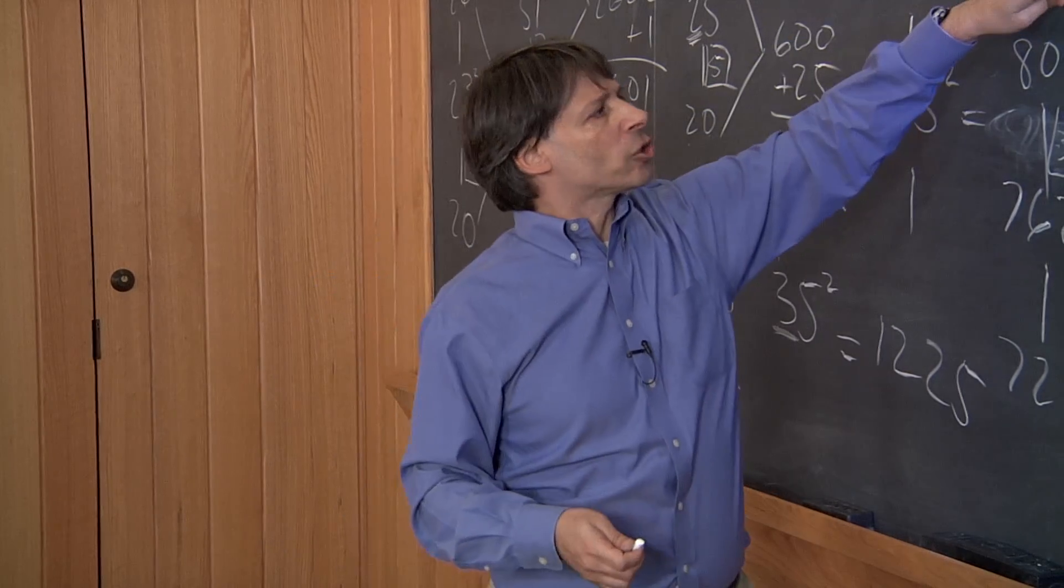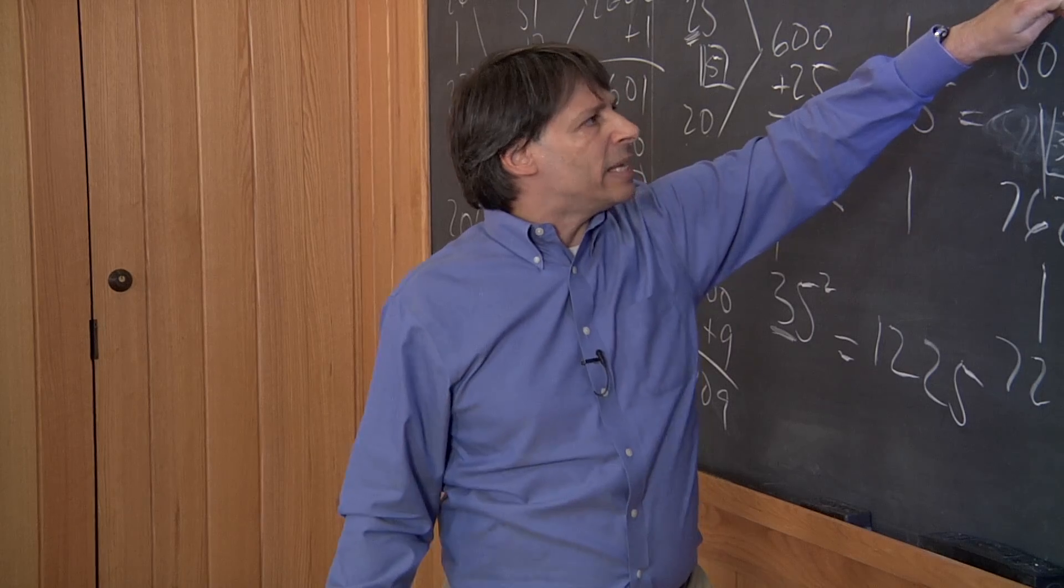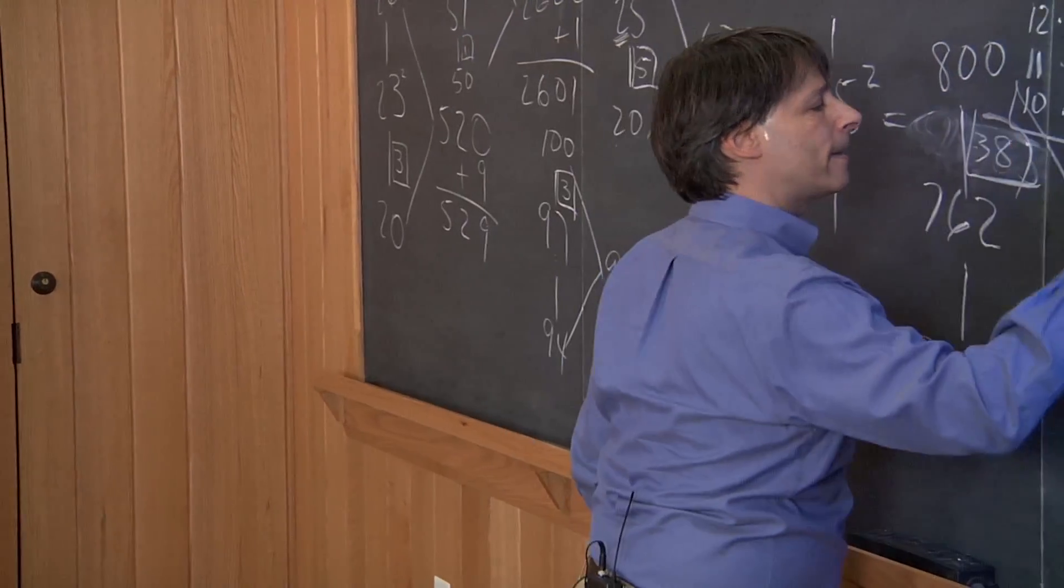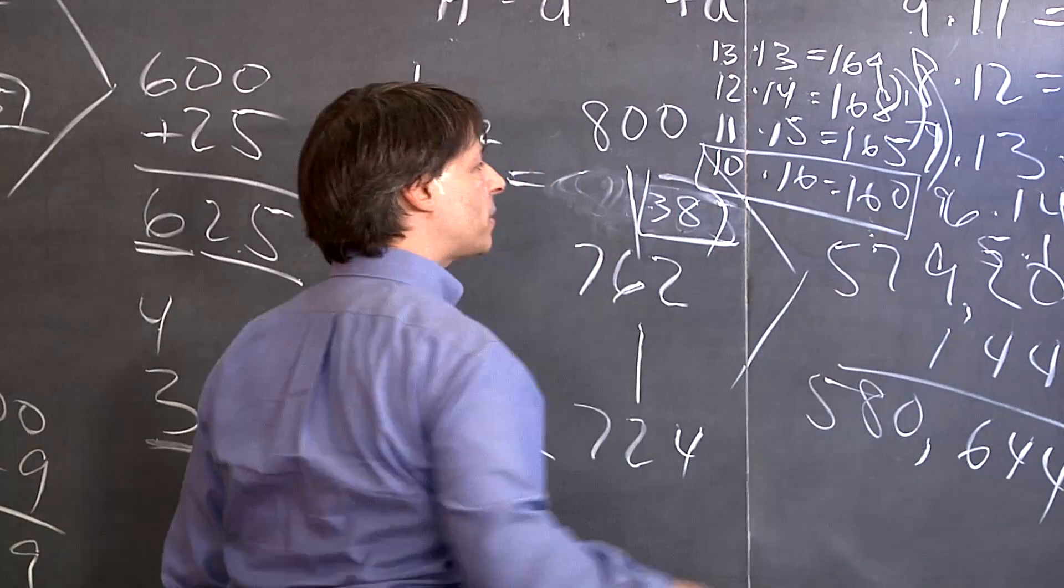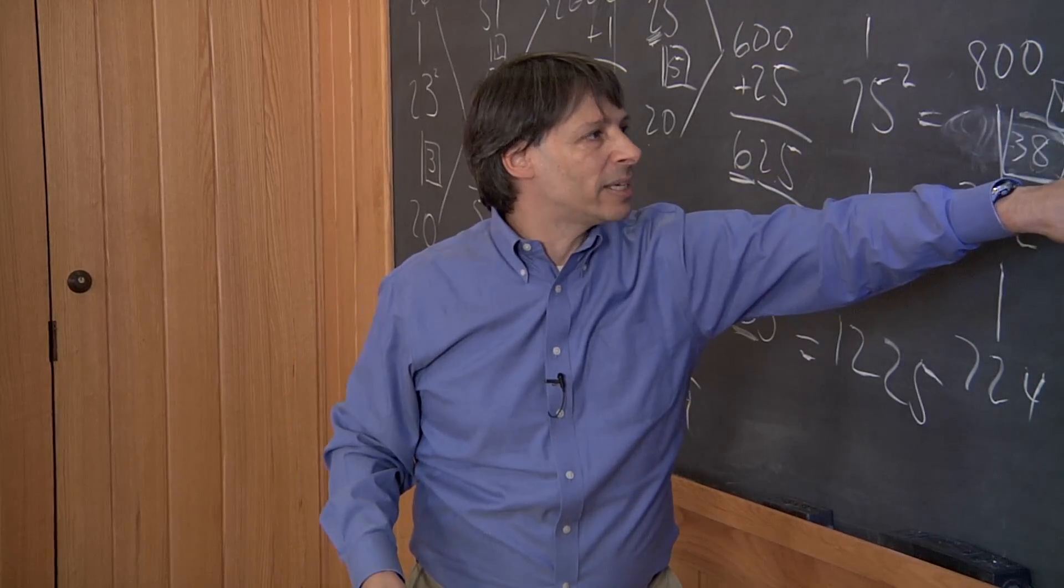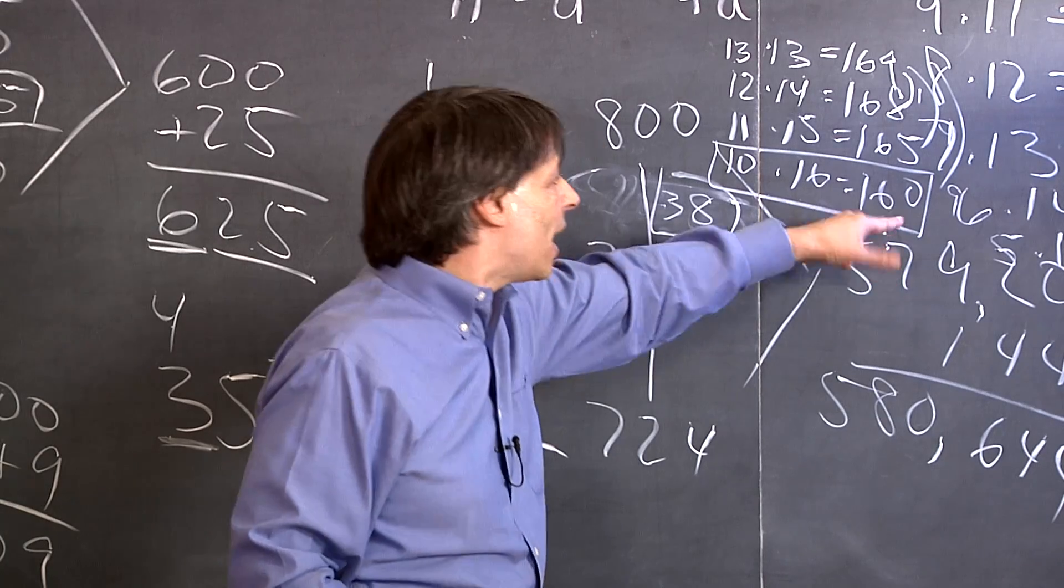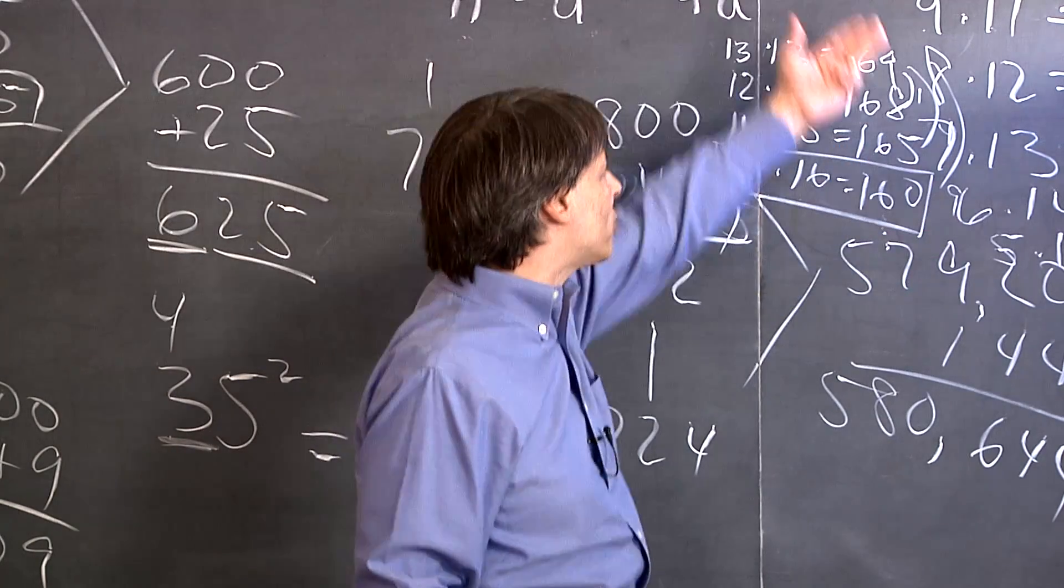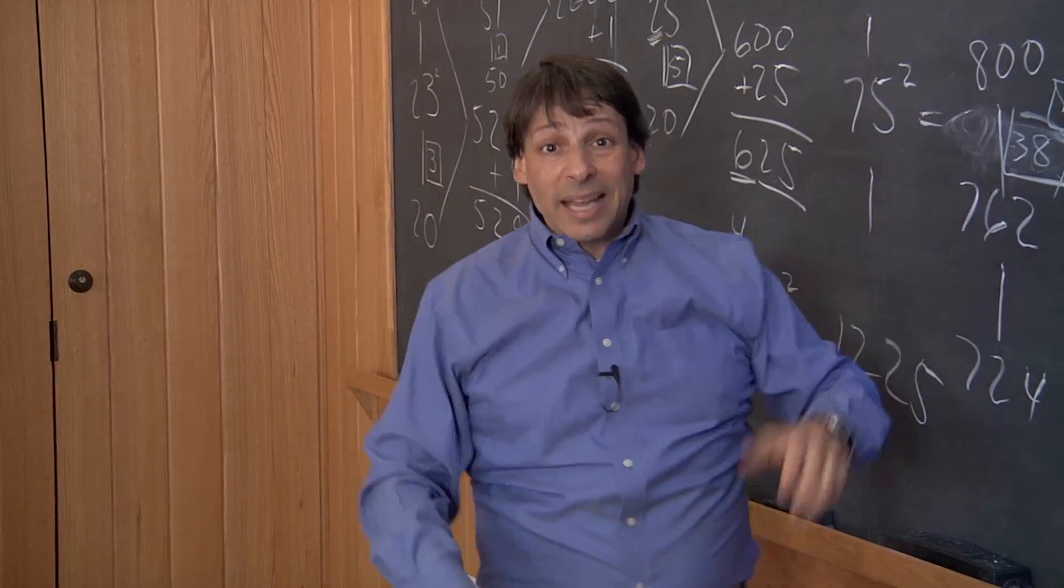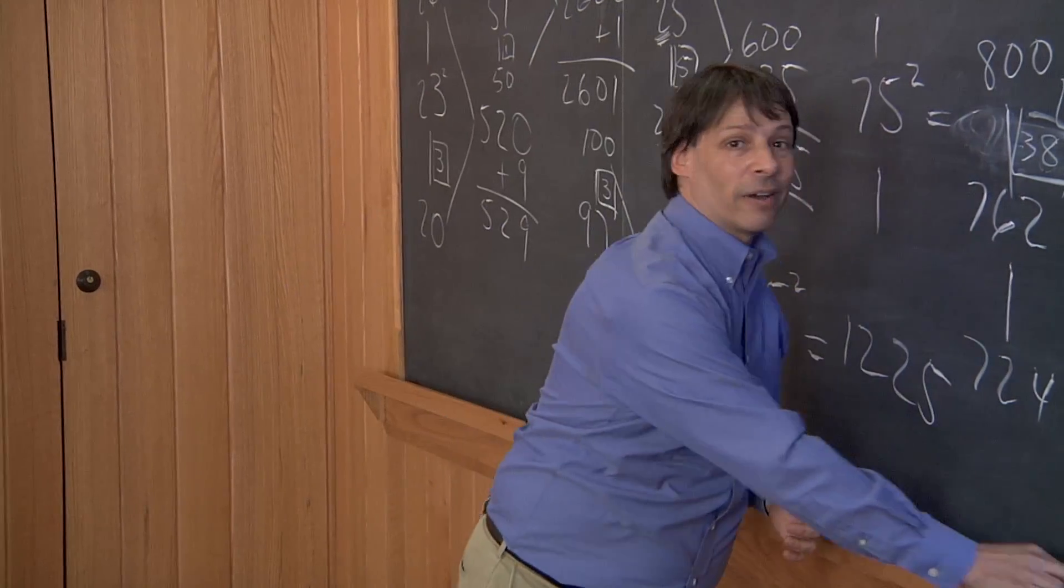Like let's say you wanted to square 13. Instead of doing 13 times 13, which is a little hard, instead try 10 times 16, which is much easier because of the zero. 10 times 16 is 160 and all you have to add to that is 3 squared to get 169. And that was the origin of this method.